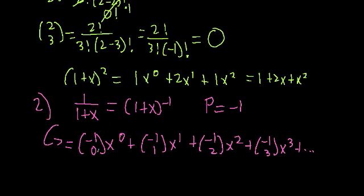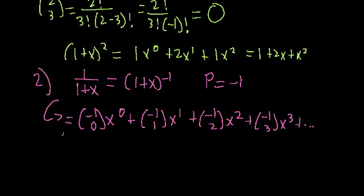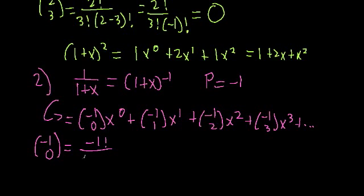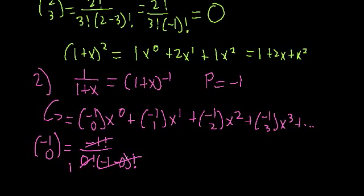So here we have a negative number choose something. You may be thinking: how is it going to work out, considering a negative factorial is more or less undefined, or infinity? But we'll see an interesting little trick. Let's look at negative 1 choose 0. That's negative 1 factorial over 0 factorial times negative 1 minus 0 factorial. Well, 0 factorial is 1, and negative 1 minus 0 is negative 1. So we have negative 1 factorial in the numerator and negative 1 factorial in the denominator — they both cancel. So even though they would technically both be infinity, we can cancel them, and the whole thing turns out to be 1.